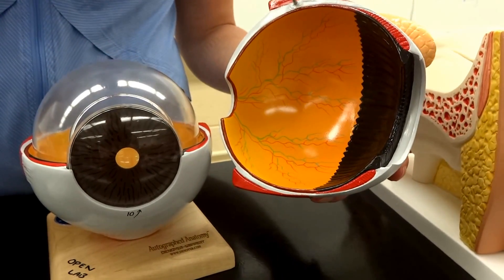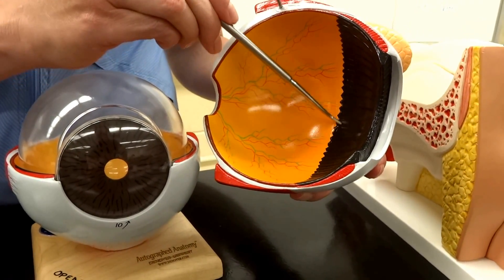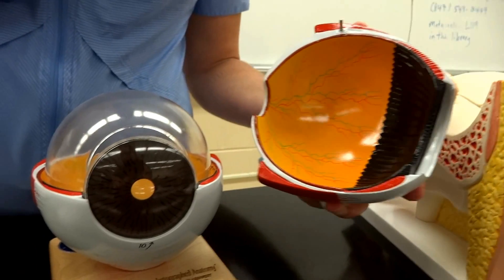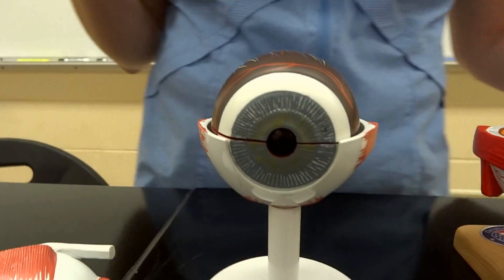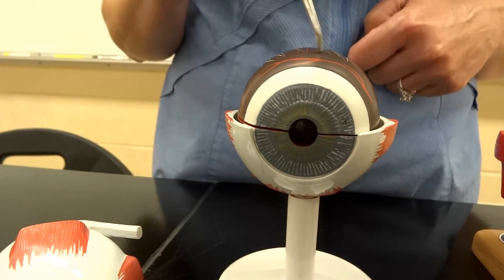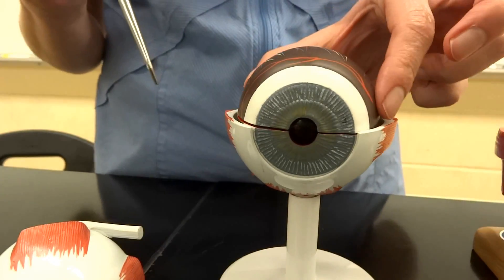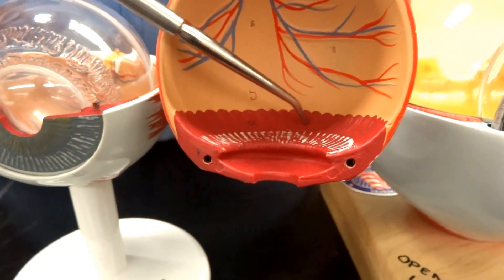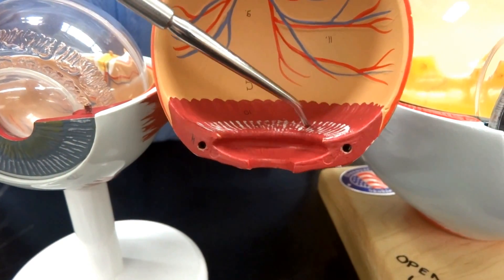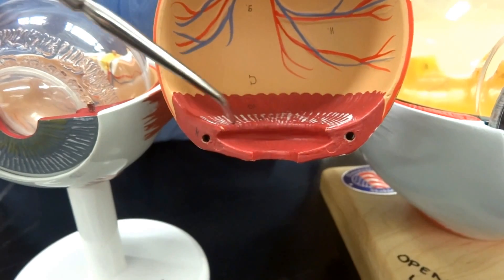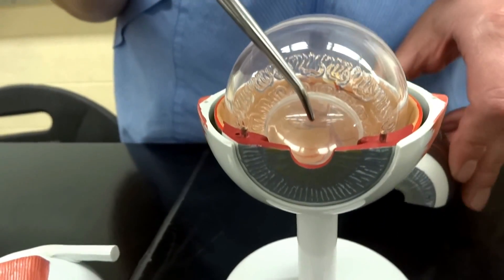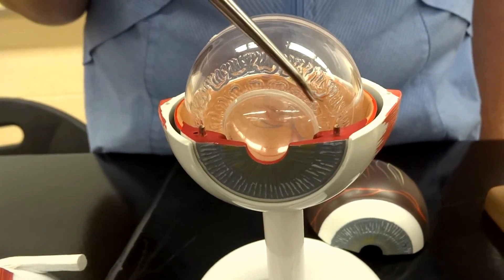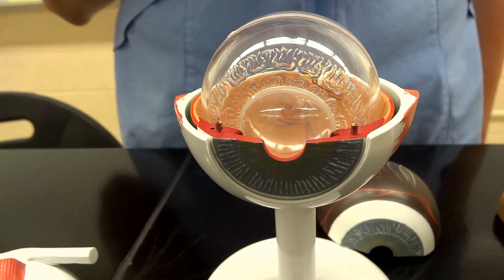That's going to be our choroid. And then the ciliary body on this model is going to be the black part. You can't see the suspensory ligaments very well on this model at all. So we could look at the other one. Back to the little guy. Little one. So on here you can see the choroid is that brown layer. And if we open up that brown layer, inside the reddish layer that looks kind of frilly, that's going to be the ciliary body. And then the white portion there are the suspensory ligaments. Their job is going to be to hold on to the lens, which is that little marble type thing that sits attached to the suspensory ligaments. And the ciliary body is actually going to be a smooth muscle that helps us to adjust so we can see close or far away.